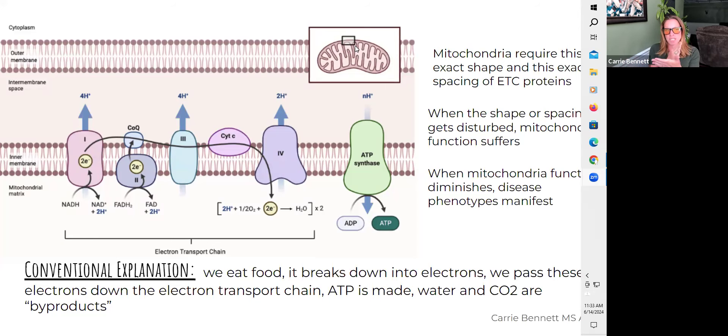And they require a very specific spacing of something called the electron transport chain. So when you actually take a cross-section, when you blow up what looks like a cross-section of where we're looking at the mitochondrial electron transport chain here in the larger image, you see that we have an outer membrane to the mitochondria and an inner membrane to the mitochondria.